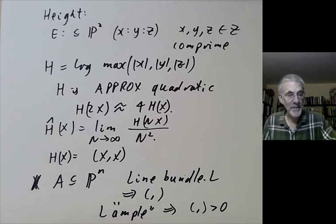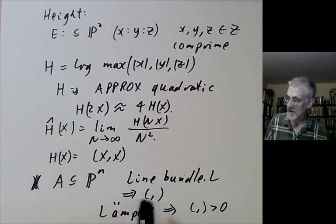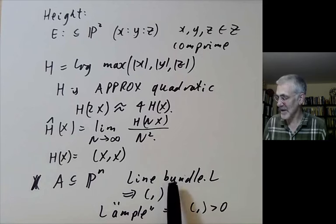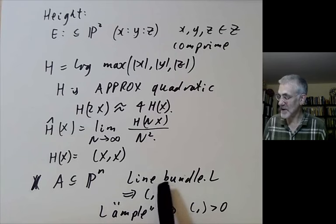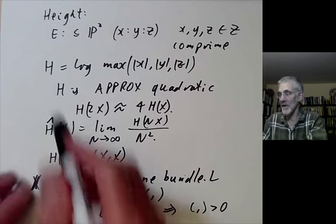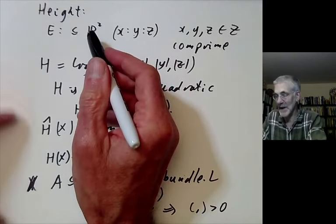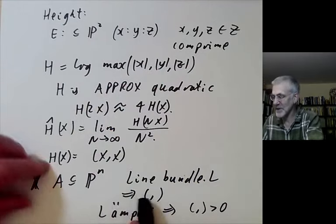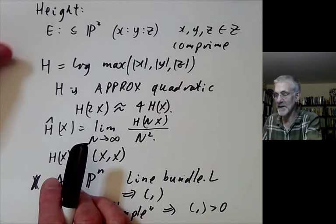This is essentially André Weil's contribution. He showed how to extend the height to more general abelian varieties. For elliptic curves, there's basically a smallest possible ample line bundle. So there's no real choice involved. You essentially just put your elliptic curve into projective space. For abelian varieties, you get quite a lot of different heights depending on which line bundle you choose.